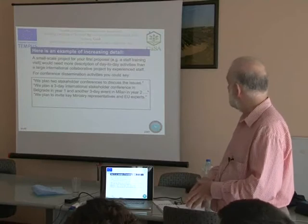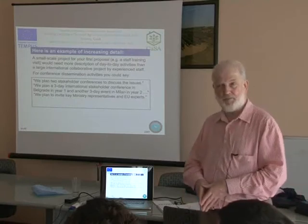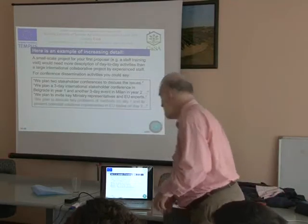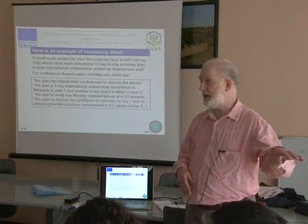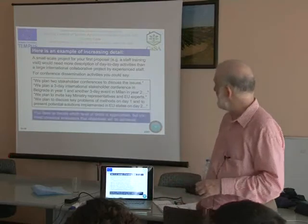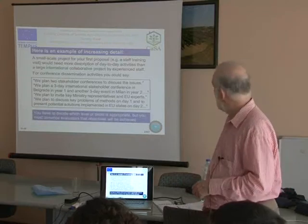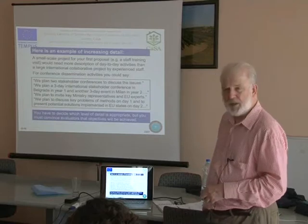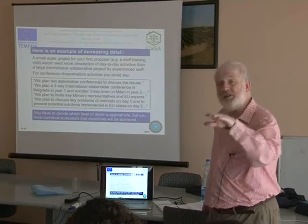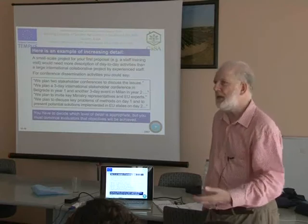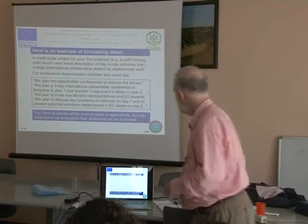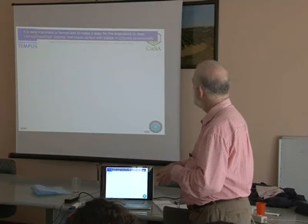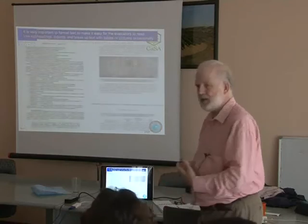Adding more detail, you could say: 'And another three-day event in Milan in year two.' You can also specify who's going to be there: 'We plan to invite key ministry representatives and EU experts.' That tells the evaluators who will attend. You could then go day by day: 'We plan to discuss key problems of methods on day one and to present potential solutions implemented in EU states on day two.' Those are gradual increases in the level of detail depending on your circumstances.